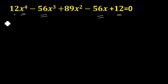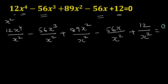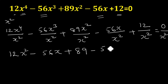Divide the entire equation by x². So what you get is: 12x² term, minus 56x term, minus 36 term, plus 12 term, and if we simplify, it becomes 12x² minus 56x. Then x³ divided by x² is x, and we get a constant 89, minus 56 times 1/x, plus 12/x², equal to 0.